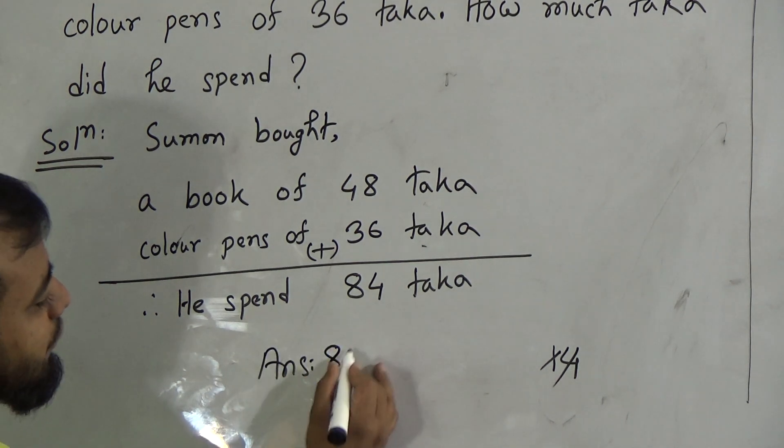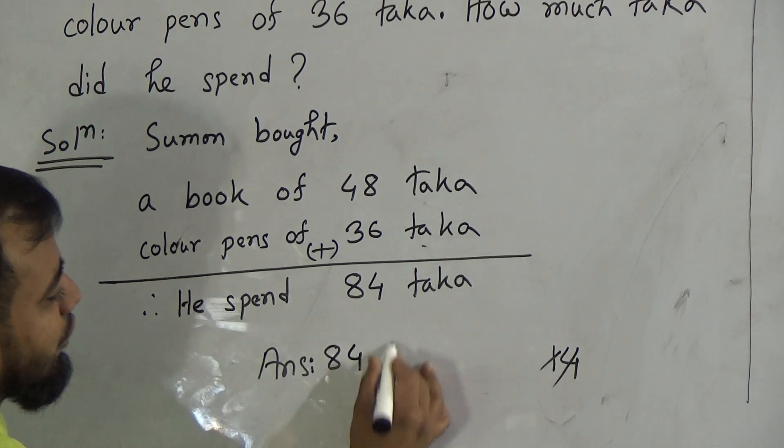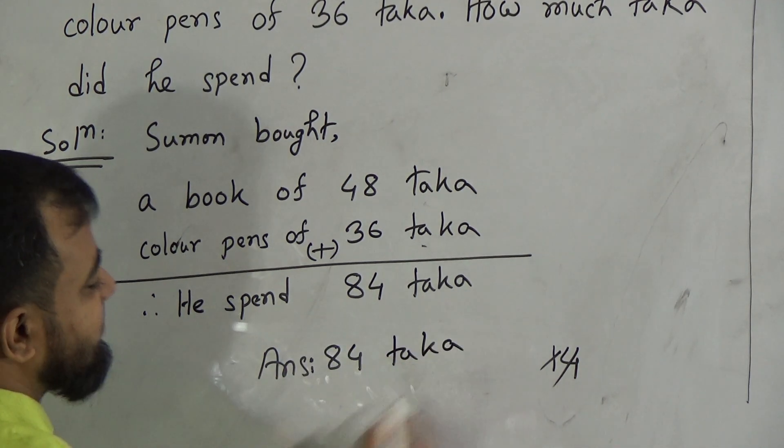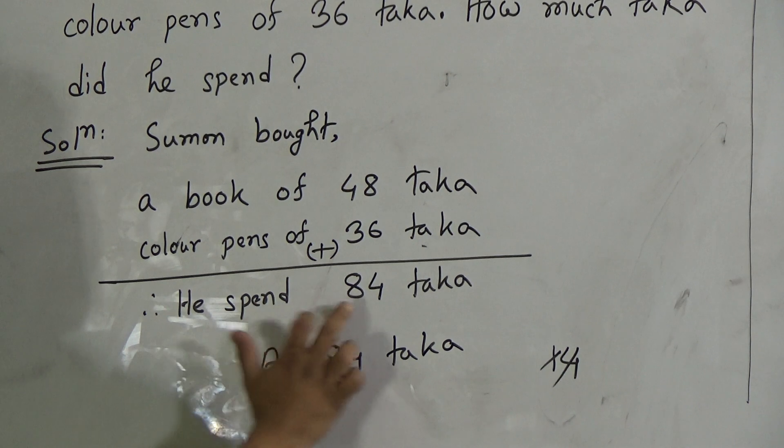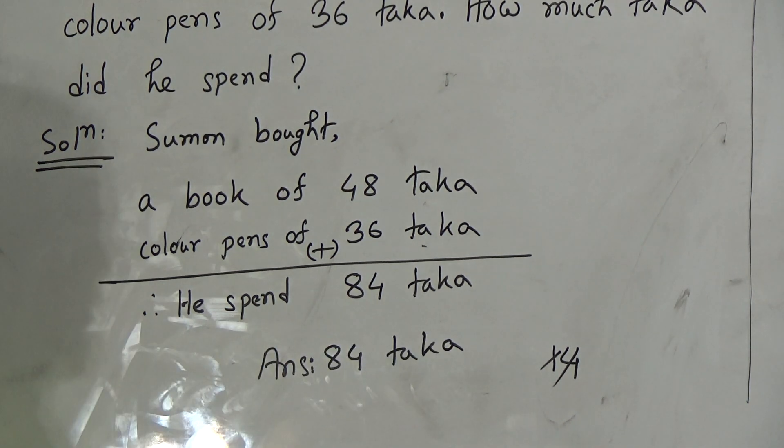Sorry, it's 84 taka, sorry. It's 84 taka. So, he spent 84 taka. It's our total expenditure. I hope, my dear students, you have understood.